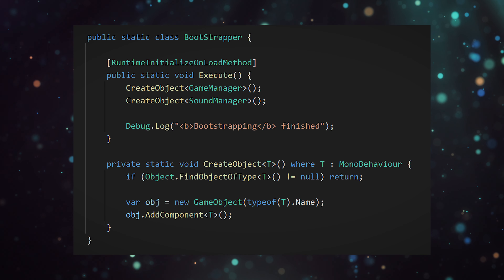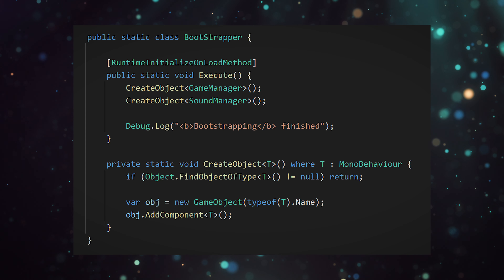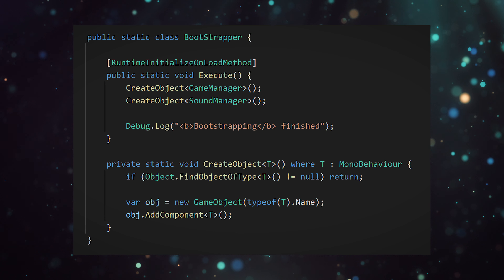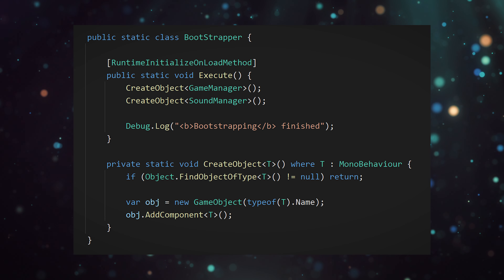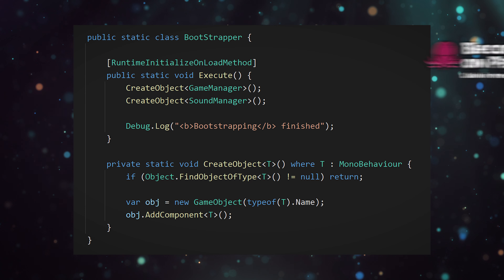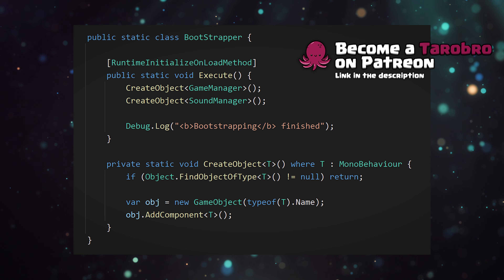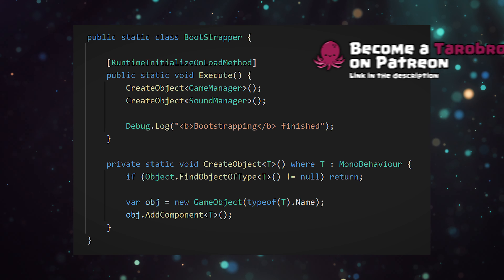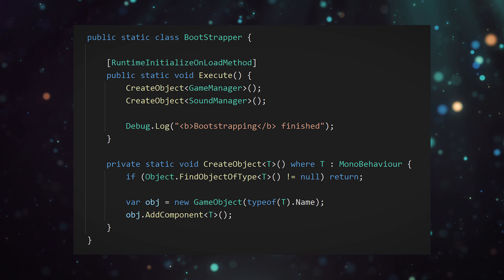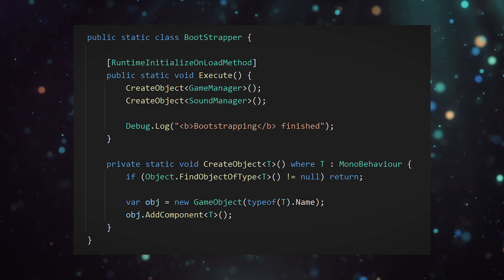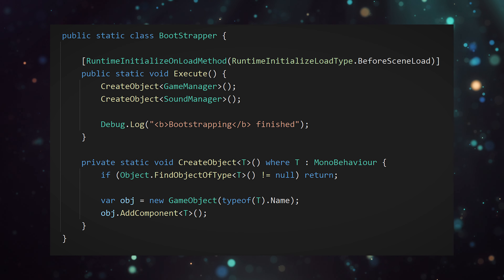If you have some logic which needs to run before anything else, or you'd like to generate persistent objects, you can use the RuntimeInitializeOnLoad method attribute. Decorate any method with this attribute and it'll now run without the need to attach it to an object. Be aware though, by default it won't be called before objects in your scene call Awake. If you want it to be called before anything else, change its type to BeforeSceneLoad.